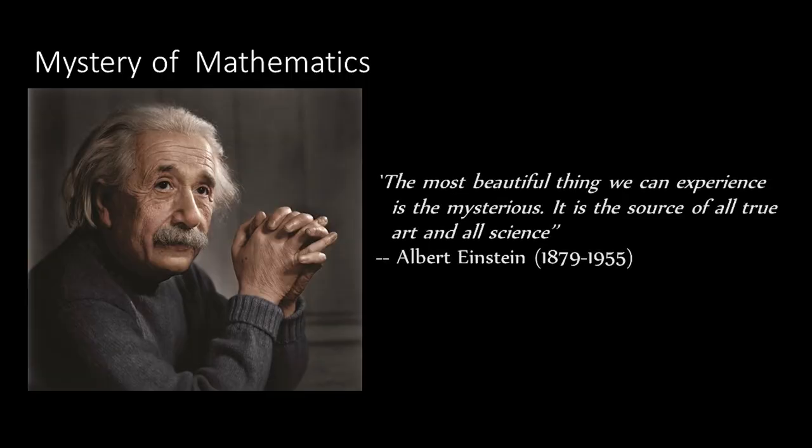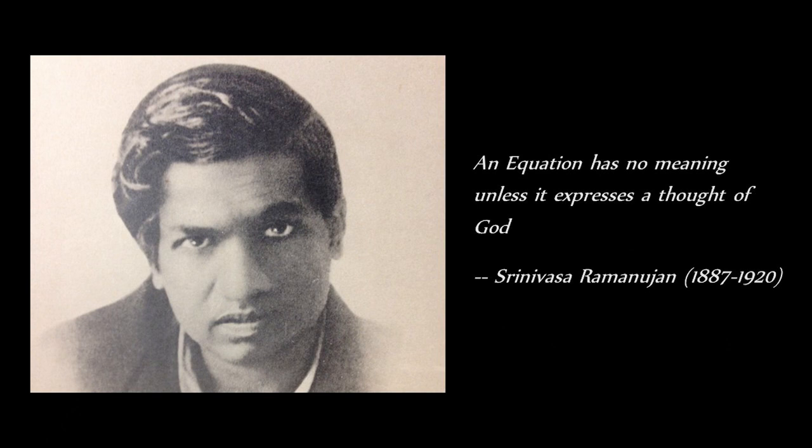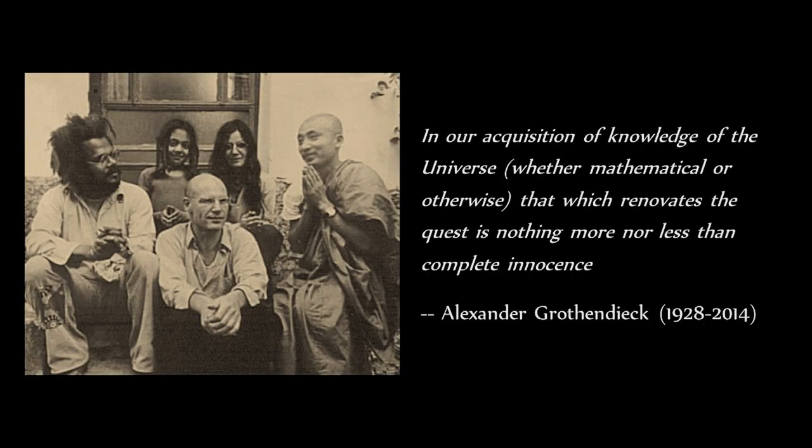So many quotations by famous scientists started to have special meaning, starting with this one from Einstein: the most beautiful thing of all is the mysterious. And of course, Ramanujan — a personal favorite, the famous number theorist — who said an equation has no meaning to him unless it expresses a thought of God. And of course, the most famous recent mathematician is Alexander Grothendieck, a French mathematician from the last century, a maverick who contributed tremendously — he took the abstraction side of mathematics to new heights, though many mathematicians didn't like this phenomenon of raising mathematics to new heights via abstraction.